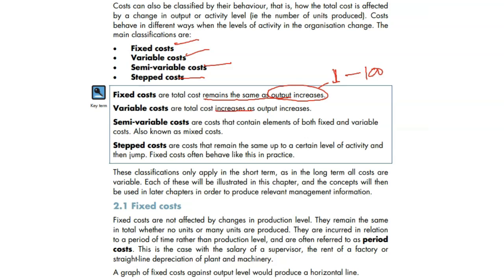Variable cost increases as your output increases. If you produce one item, it's going to cost you only for one item. But the more you produce, the more it's going to cost you.